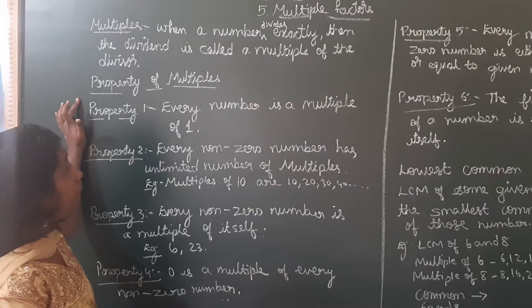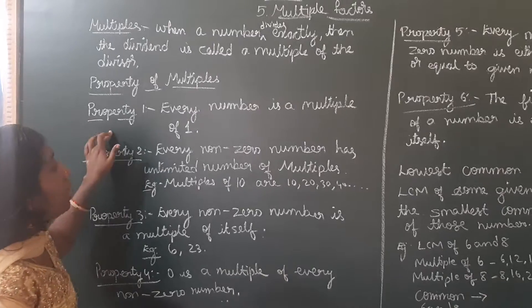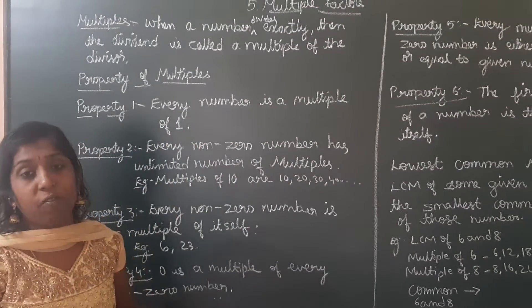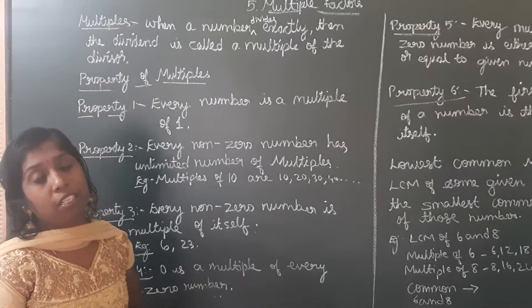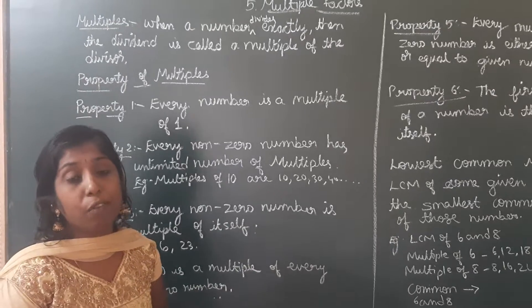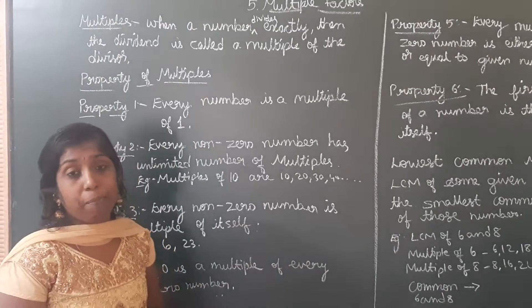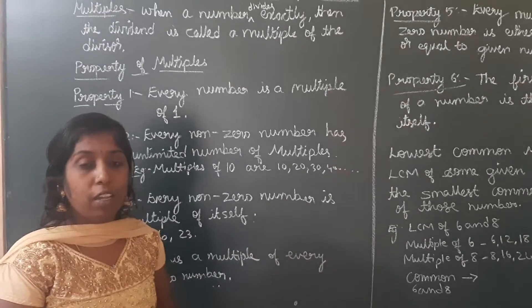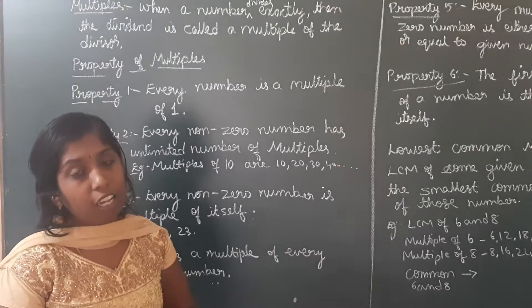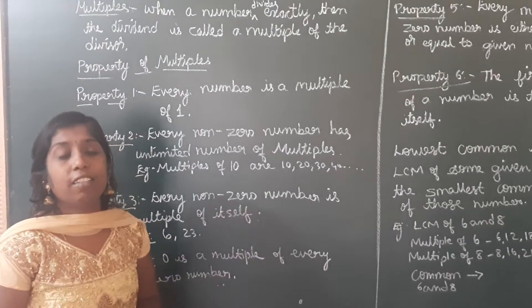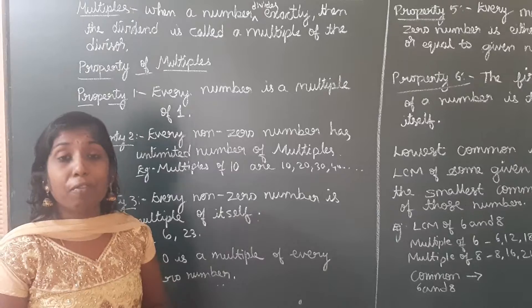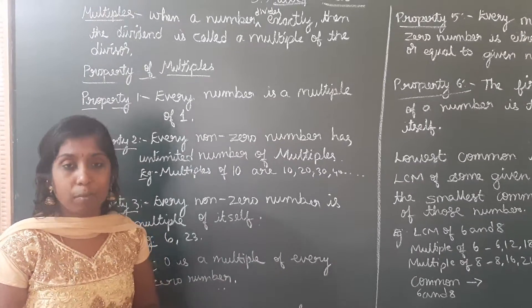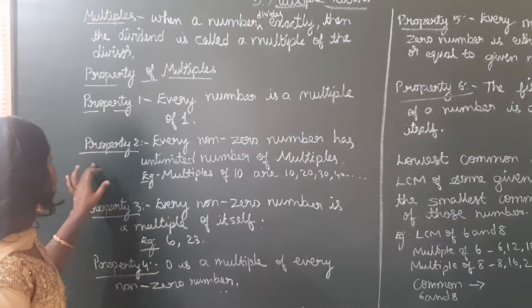It is the property of multiples. The first property is every number is a multiple of 1. For example, 8 is a multiple of 1 — 1 times 8 is 8. Also, 33 is a multiple of 1. So every number is a multiple of 1.